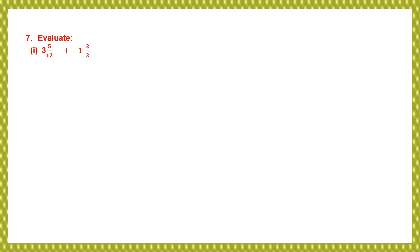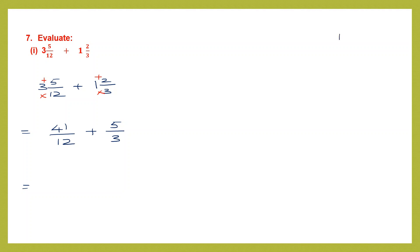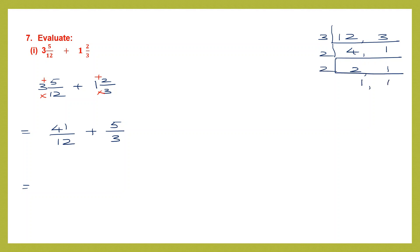Question 7, evaluate — we have addition: 3 and 5 by 12 plus 1 and 2 by 3. First step is conversion: 12 threes are 36 plus 5 is 41, so 41 by 12. Converting the second: 3 ones are 3 plus 2 is 5, so 5 by 3. Now we find the LCM of 12 and 3: 3 fours are 12 and 3 ones are 3; using 2 twice gives LCM of 12.